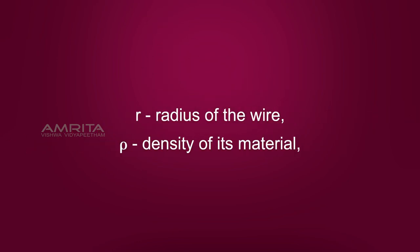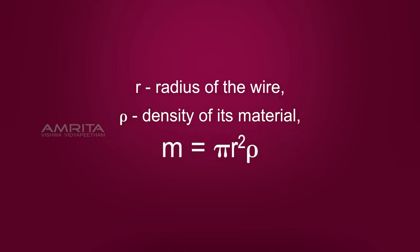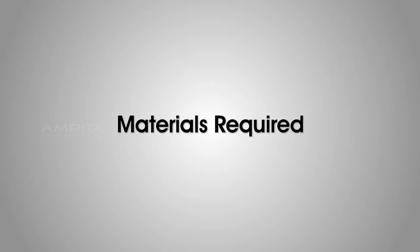If r is the radius of the wire and ρ is the density of its material, M is equal to πr²ρ.